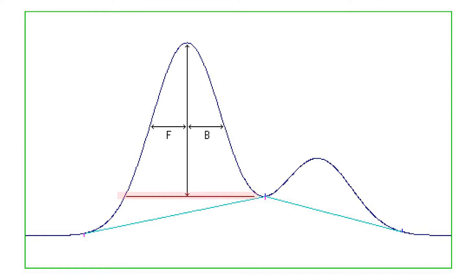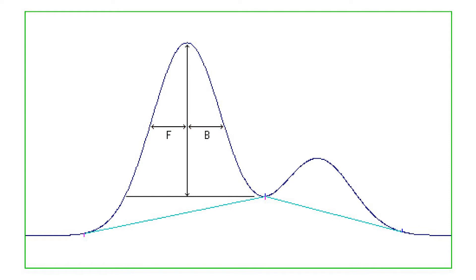First, an auxiliary horizontal baseline is drawn from the baseline start or end point, whichever is higher. A second horizontal line is positioned halfway between the auxiliary baseline and the top of the peak, measured along the vertical line through the peak top.